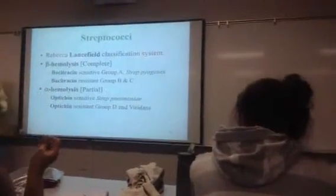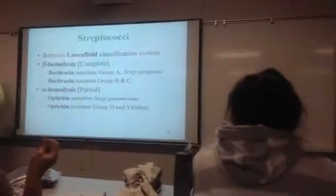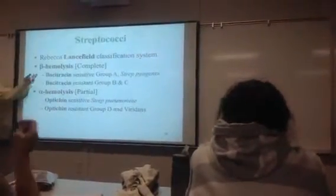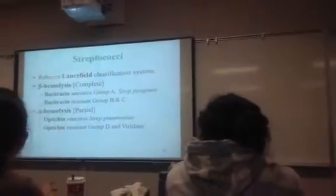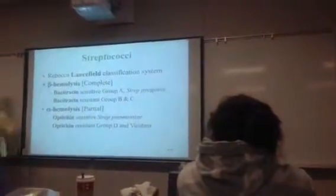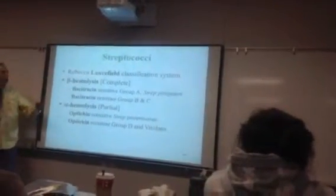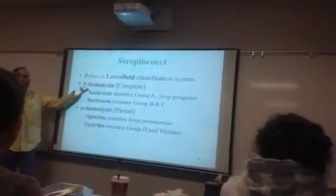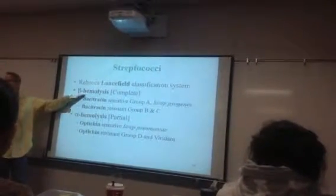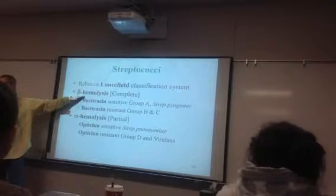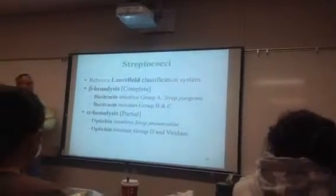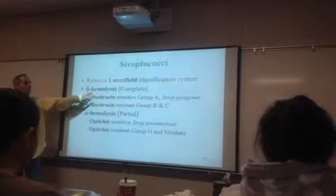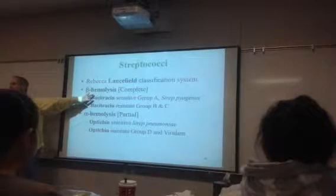There are two groups of strep: a beta hemolytic group and an alpha hemolytic group. The beta hemolytic group causes complete hemolysis — it destroys red blood cells completely. This group is the one that is really dangerous.